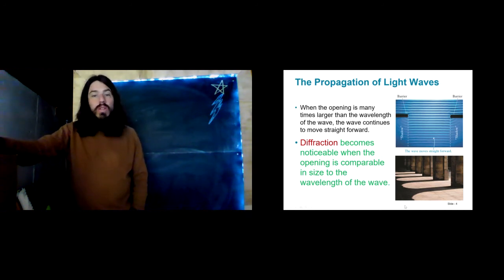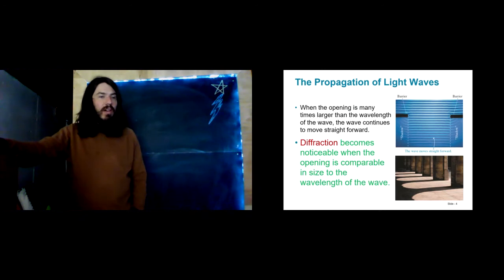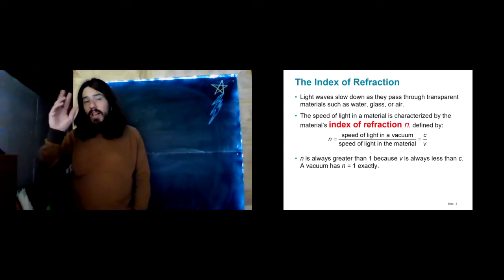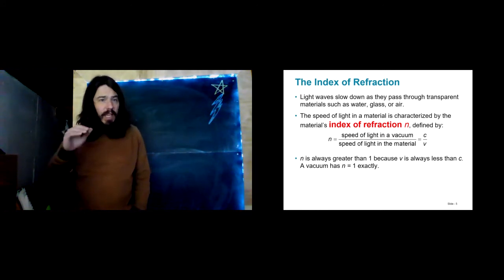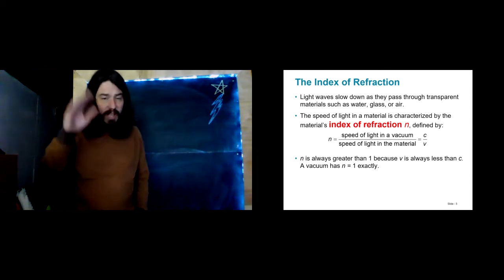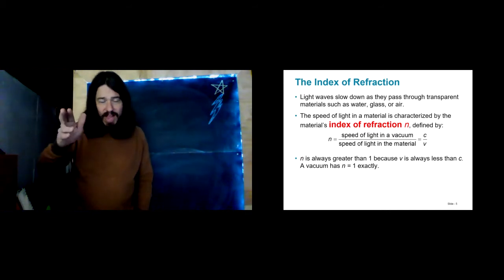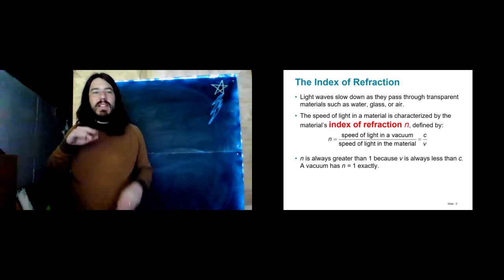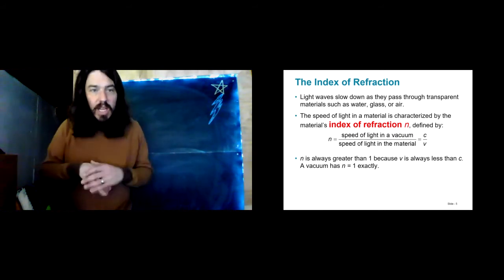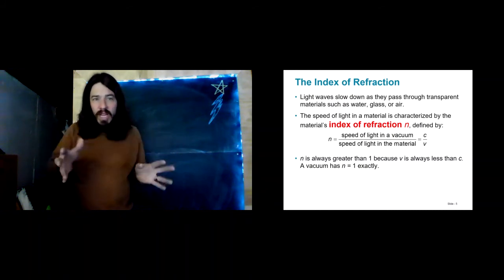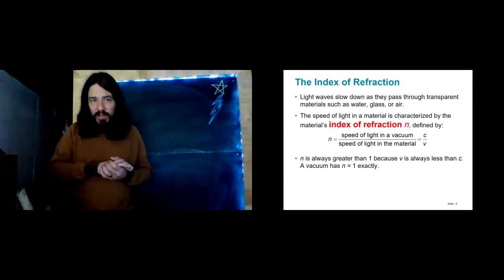Diffraction becomes noticeable when the opening is comparable in size with the wavelength of the wave. Now, we've been talking a little bit about the speed of light. The speed of light is three times ten to the eighth meters per second — that's just super, super fast. At some point in our lives, we've learned that that's some sort of a cosmic speed limit — that no physical object or information can travel faster than the speed of light.